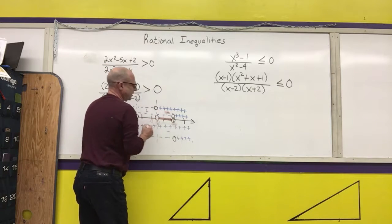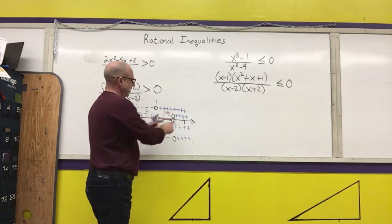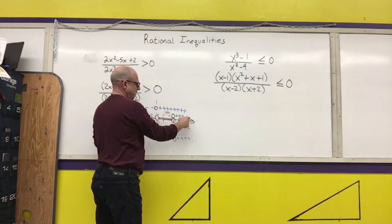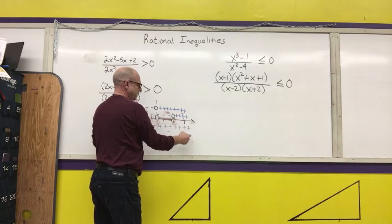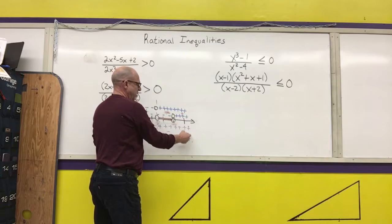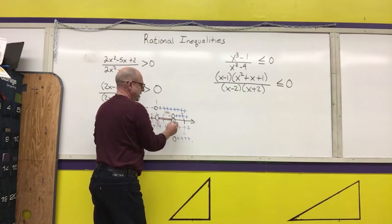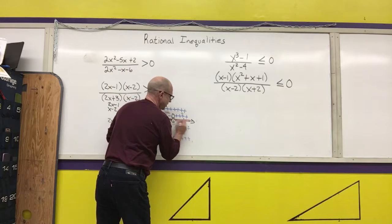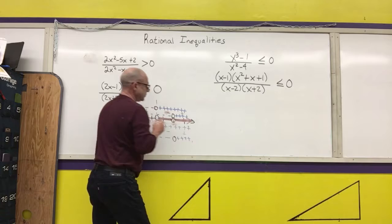The last region to check is beyond 2. Positive times positive is positive; positive times positive is positive; positive over positive is positive. So that region gets shaded in.